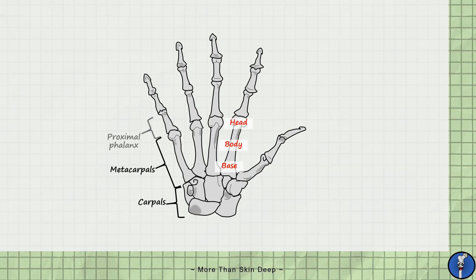Then we have the five proximal phalanges, the four intermediate phalanges and the five distal phalanges. The thumb only has a proximal and distal phalange and no intermediate one.